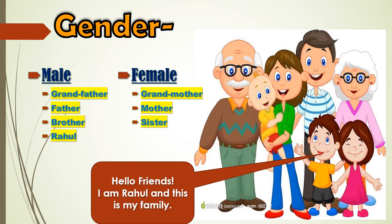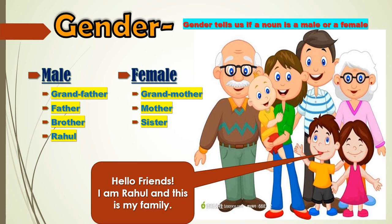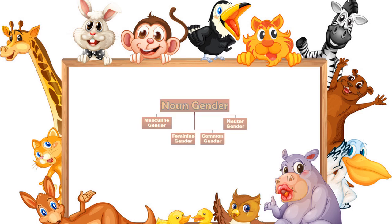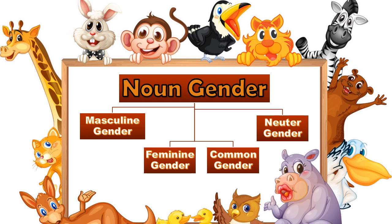So children, now we can see that gender tells us if a noun is male or female. Hence, those naming words which tell us about the male or female category are called noun gender.